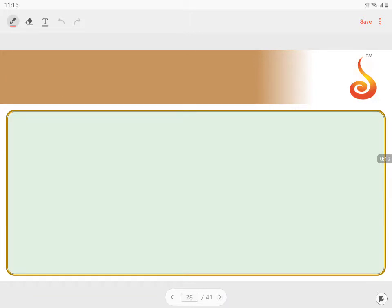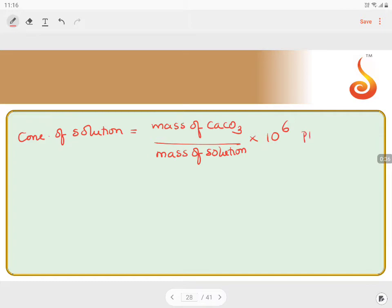So the concentration of the solution equals: we are expressing in terms of parts per million, mass of CaCO3 by mass of solution times 10 to the power 6 parts per million.